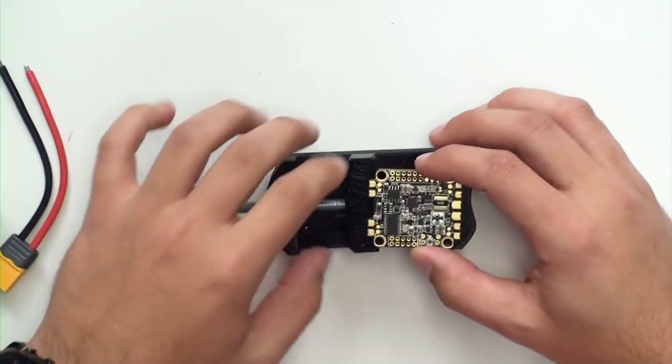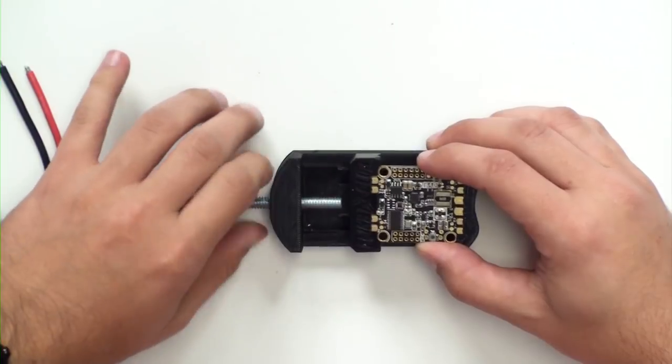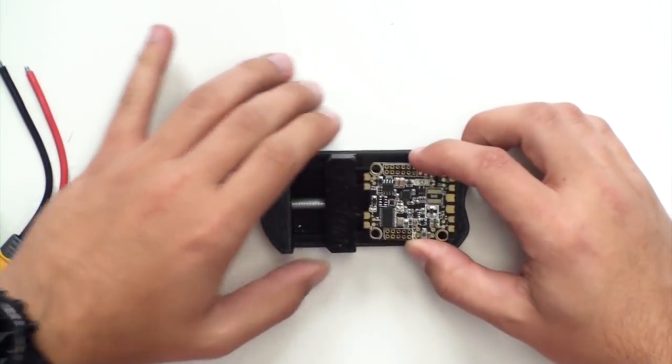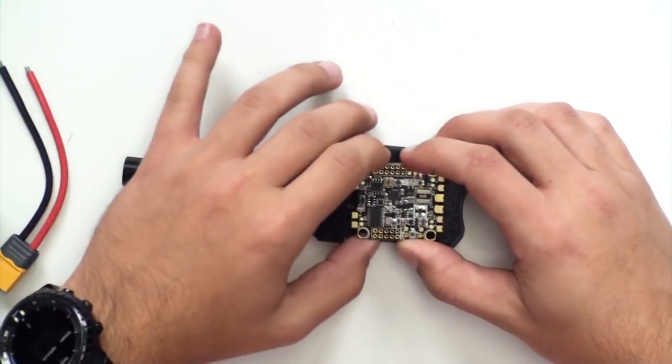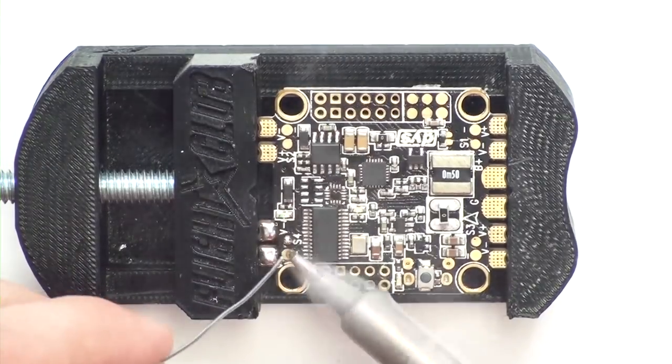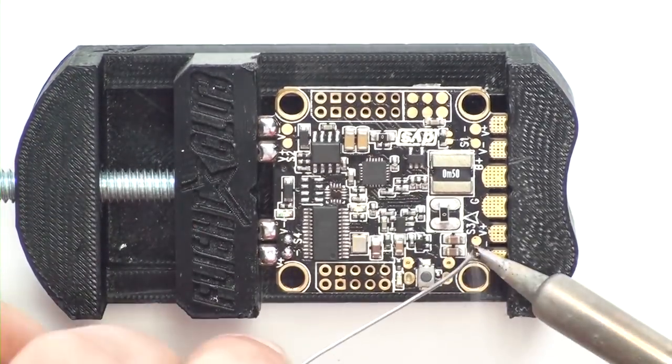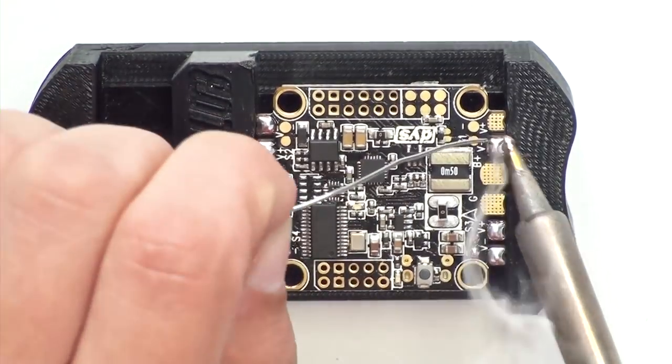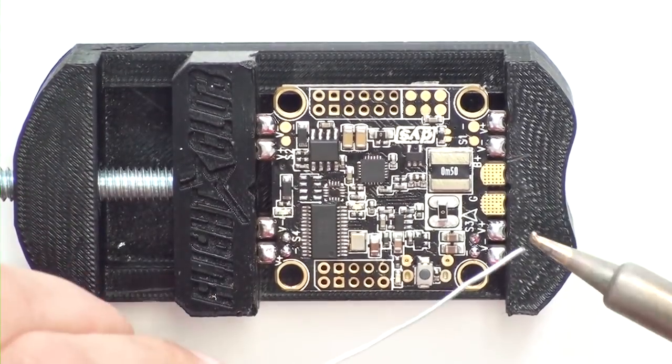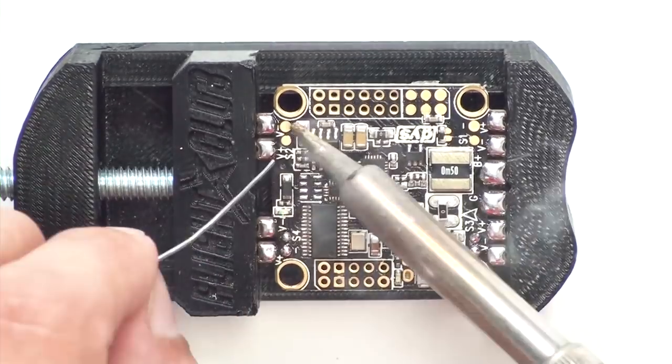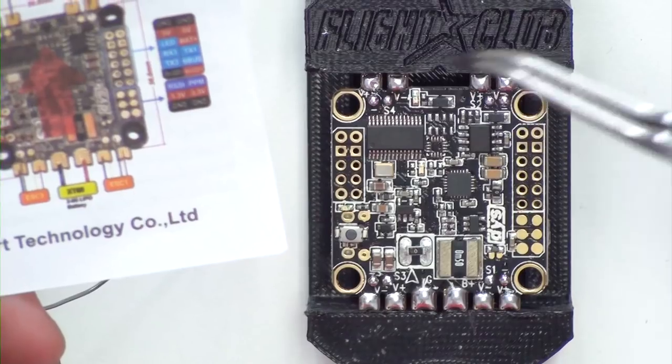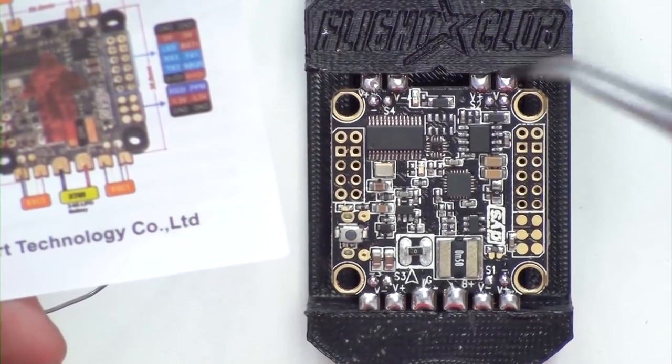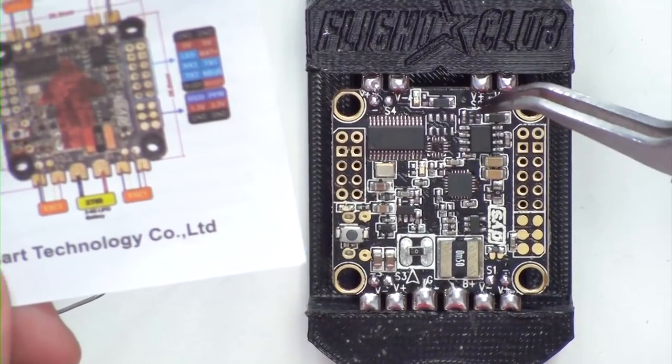The first thing I'm going to be doing is putting the flight controller in a little clamp and we're going to be pre-tinning all the solder points that we're going to be using for the build. Now we have the basic things soldered up like the ESC's power and ground and the signal and ground.